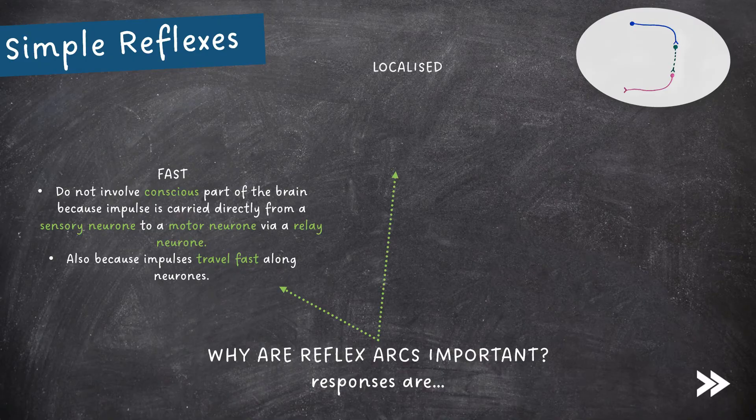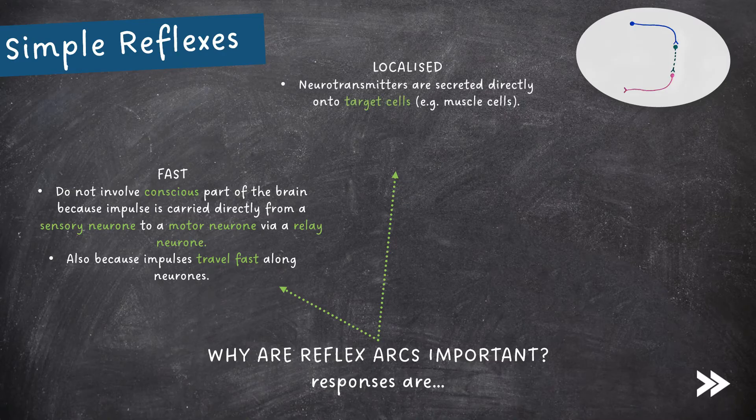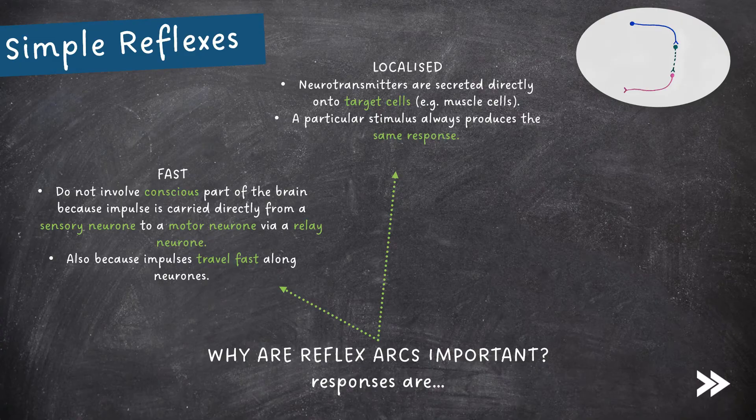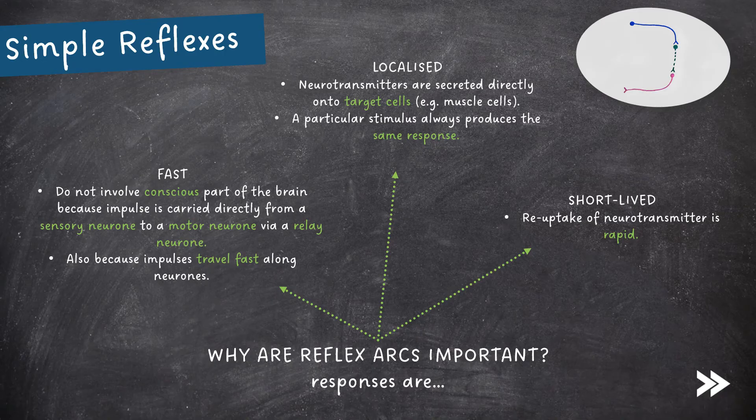The next feature is that responses are localised. Neurotransmitters are secreted directly onto target cells, such as muscle cells. A particular stimulus always produces the same response. And finally, the response is short-lived because the reuptake of neurotransmitter is rapid.